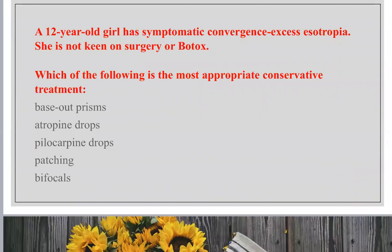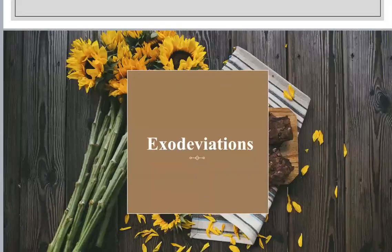MCQ: A 12-year-old girl has asymptomatic convergence excess esotropia. She is not keen on surgery or botox. Convergence excess means high AC/A ratio. The appropriate treatment is bifocals — plus three near glasses — and she will be fine.